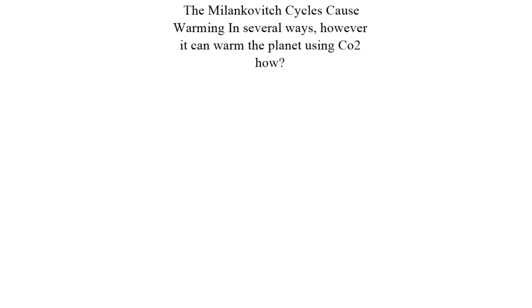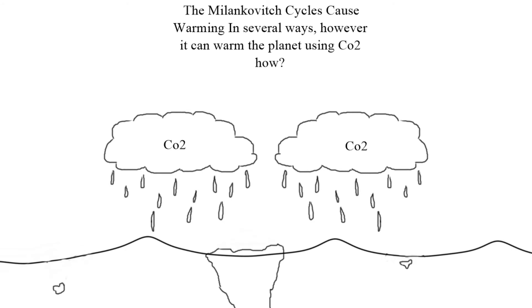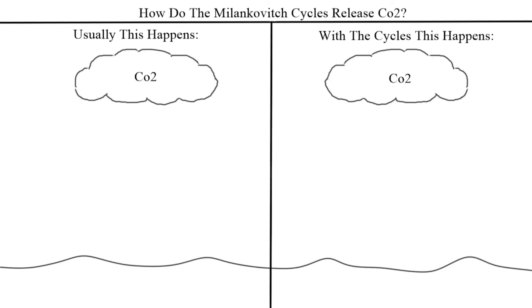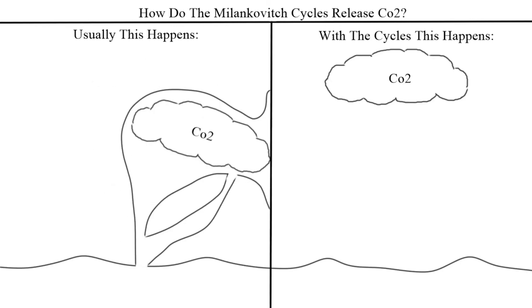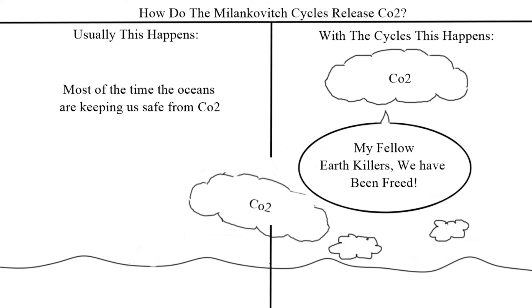The Milankovitch Cycles have been the cause of past warming because of CO2. How does this occur? Oceans absorb lots of CO2 and help us buffer the impacts from climate change. The Milankovitch Cycles increase the temperature of the planet, causing the evaporation of water and release of CO2.